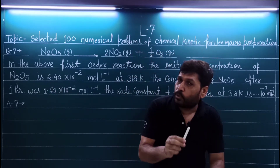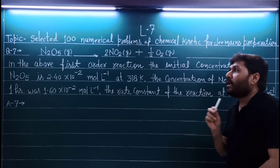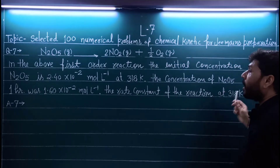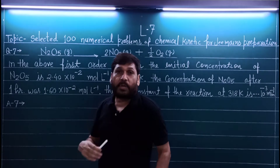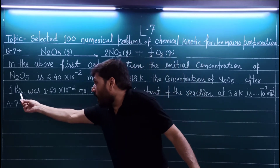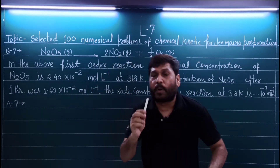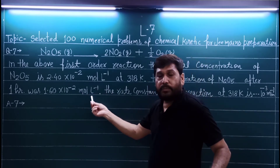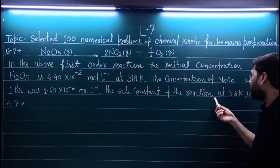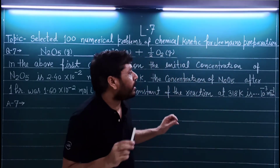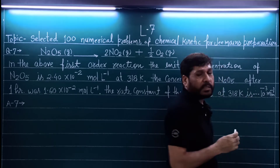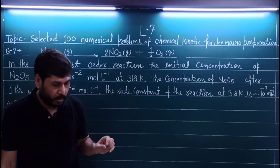The initial concentration of N2O5 is 2.40 × 10⁻² mol/L at 318 Kelvin. After 1 hour the concentration of N2O5 becomes 1.60 × 10⁻² mol/L. We need to find the rate constant k at 318 Kelvin. The answer is given as 10⁻³ per minute, and this is an integer-type answer, not objective.